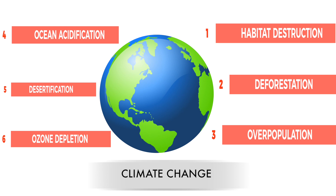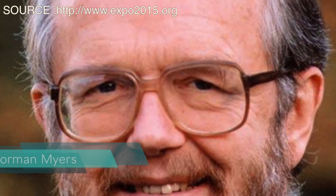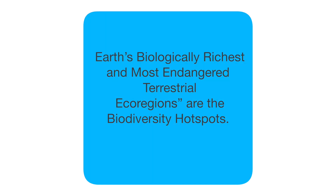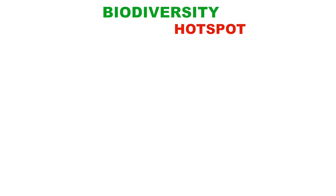All these factors lead to the destruction of ecosystems and the whole flora and fauna on planet Earth. The Earth is too big to get full attention at once, and we have limited time and limited resources to curb biodiversity loss. To overcome these problems, it was back in 1988 that Norman Myers came up with the idea of biodiversity hotspots. He said Earth's biologically richest and most endangered terrestrial ecoregions are the biodiversity hotspots and need our attention.